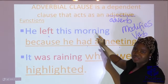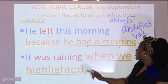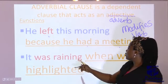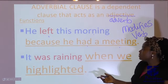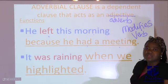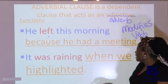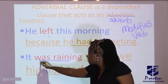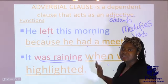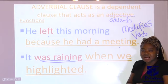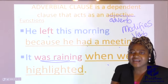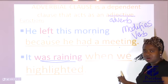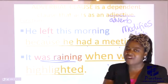Another example: 'It was raining when we highlighted.' You ask: when was it raining? The answer is 'when we highlighted' — this is still making reference back to the verb and modifying it. So to summarize: an adjectival clause qualifies a noun or a pronoun, while an adverbial clause modifies a verb or an adverb.